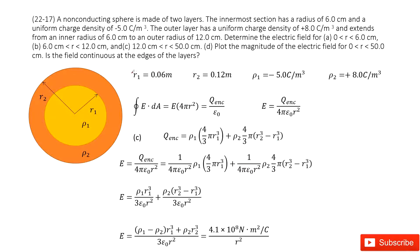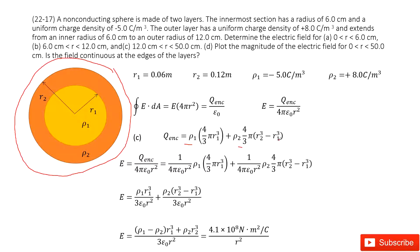The third part is the region that encloses all the objects — outside R2. The enclosed charge is the yellow part plus the orange part, where the orange part uses R2 cubed minus R1 cubed. Substituting and simplifying — the 4π terms cancel — you write the function, input all the given quantities, and get the answer for region C.